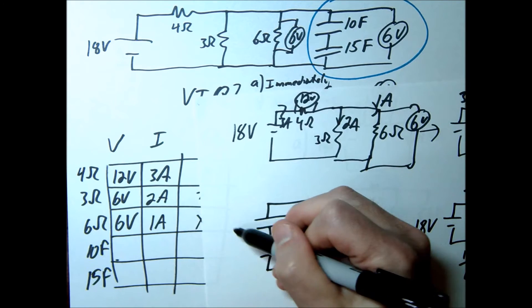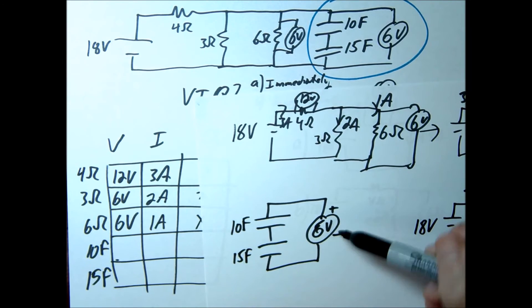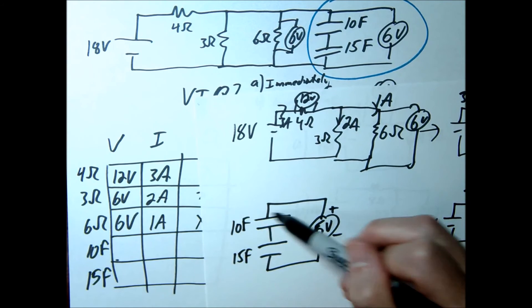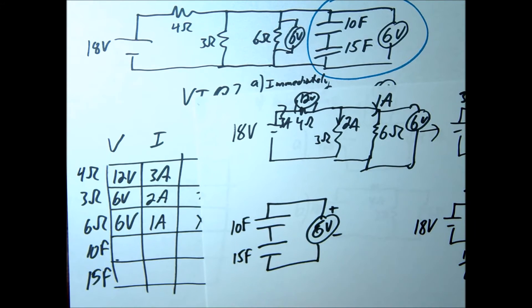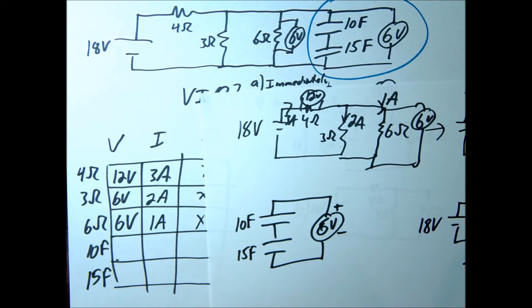So if I asked you this problem—here's 10 farads, here's 15 farads capacitor, and I hook this up to 6 volt—could you find the charge stored on these and the voltage across? And I think you could. So if so, go ahead and pause this and see if you can finish up this problem.